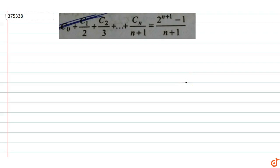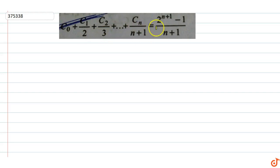In this question, we have to prove that the sum of binomial coefficients C₀ plus C₁ upon 2 plus C₂ upon 3 plus up to Cₙ upon n plus 1 is equal to 2 raised to power n plus 1 minus 1 upon n plus 1.